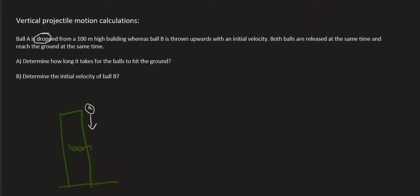Then it says whereas ball B is thrown upwards with an initial velocity. So ball B is going to be thrown upwards. Technically I should have added here from the top of the building. It's not being thrown from the ground. So let's just add that in there, from the top of the building.